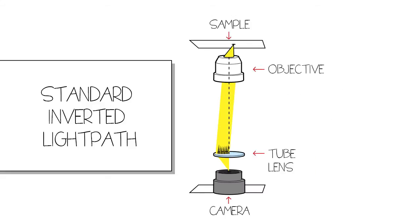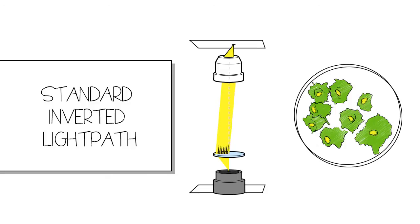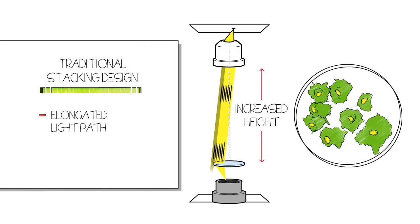This increase in height leads to elongation of the light path. Consequently, image quality can be compromised because some of the light cannot reach the tube lens. This leads to a smaller field of view and vignetting in the camera ports.